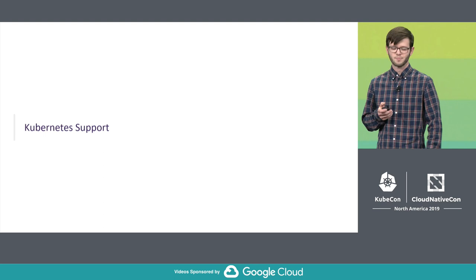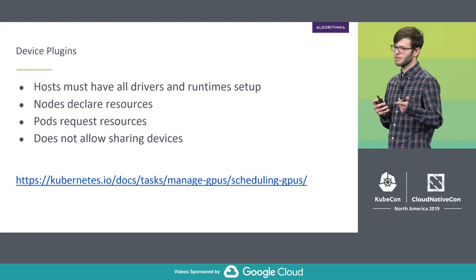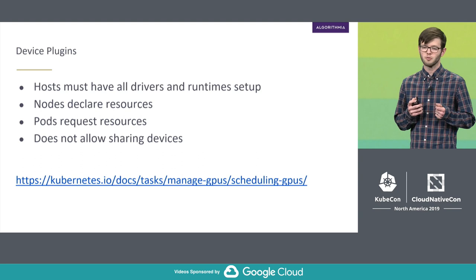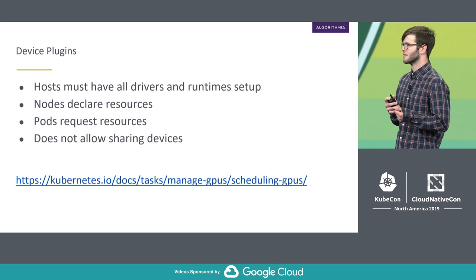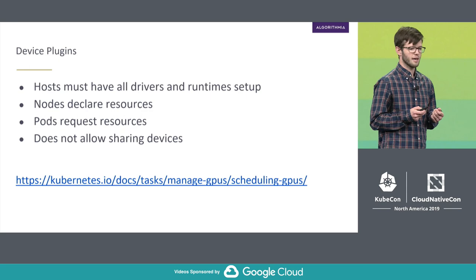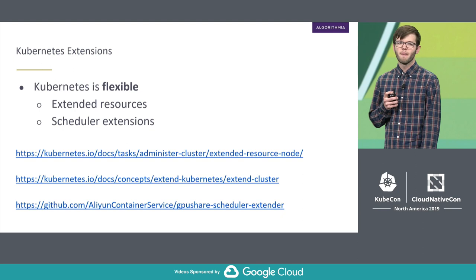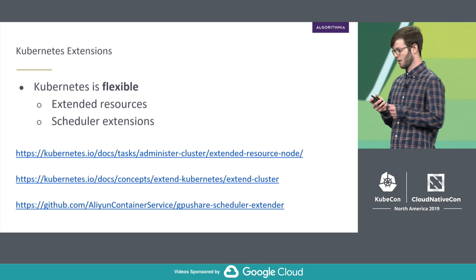So what does Kubernetes support? Kubernetes has device plugins, so the operator of a cluster has to make sure that all nodes in the cluster have drivers, runtimes, or whatever they may need in order to actually support the device. Once you've done that, you have to configure the kubelet to declare that it has this device available to the Kubernetes API server. At that point, pods can request to use a device, and the Kubernetes scheduler will make sure that pods only run on nodes that have a device available. However, it does not allow for sharing of devices at this point in time.